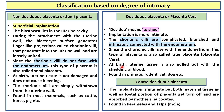At birth, uterine tissue is also pulled out with the shedding of blood. This is found in primates, rodents, cat, dog, etc.